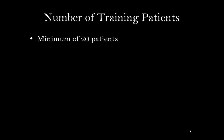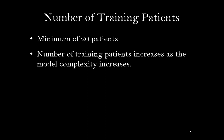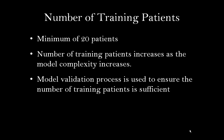The minimum number of training patients for a rapid plan model is 20 patients. Experience has shown that 40 to 50 patients is a reasonable number for a prostate model. However, as model complexity increases, the number of patients needed to train the model also increases. The model validation process is used to ensure that the number of training patients is sufficient, and this concept will be covered in greater detail in subsequent training modules.